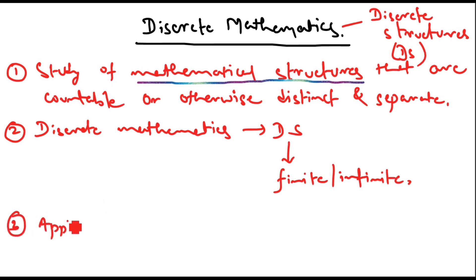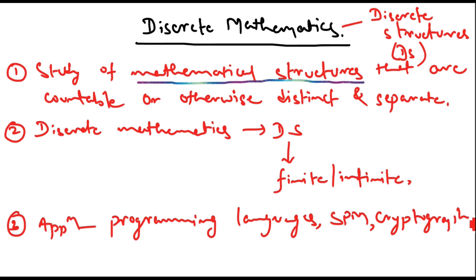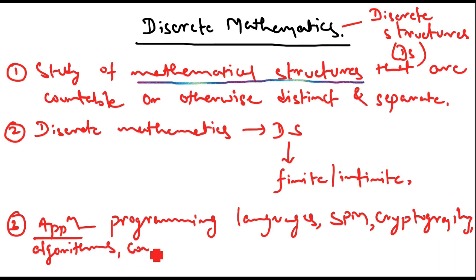The applications of discrete mathematics are many. It is used in programming languages and in software project management (SPM). Then there is the biggest role in cryptography — cryptographic techniques are used for security, where you encrypt and decrypt your codes. It also has a very big application in the field of algorithms analysis. Then there are computer networks and computer network management.